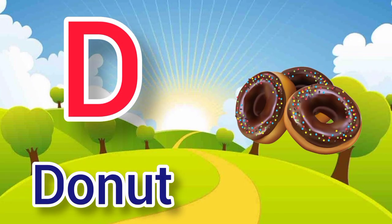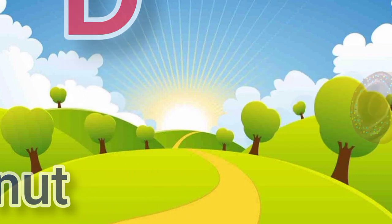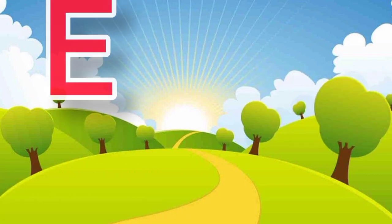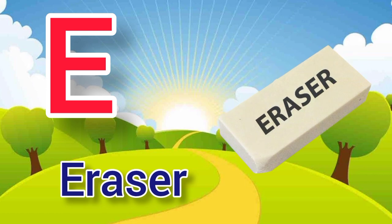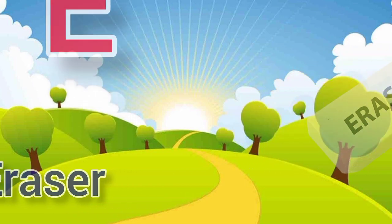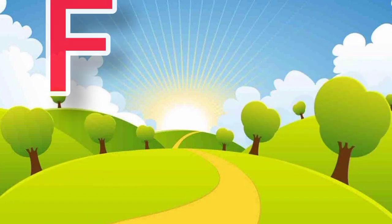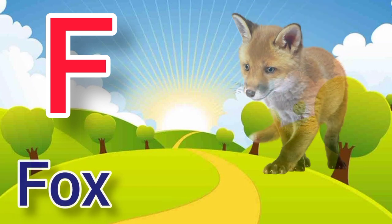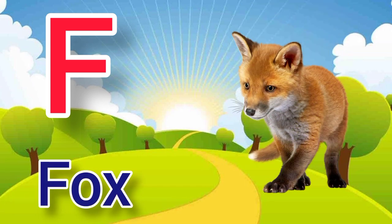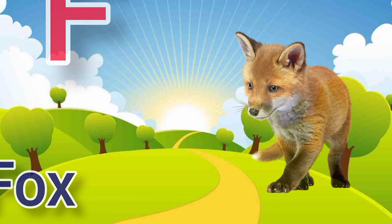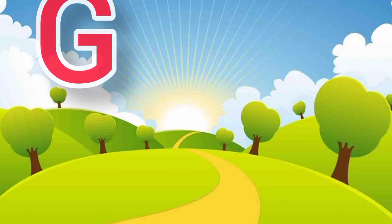D. D for donut, donut means donut. E. E for eraser, eraser means rubber. F. F for fox, fox means loomdi.